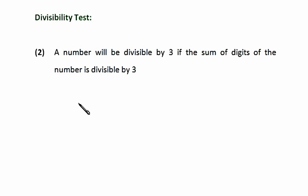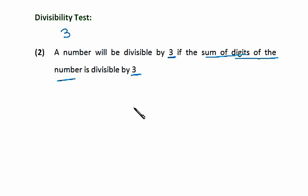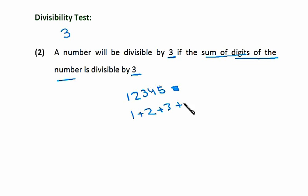Now friends, we'll do the divisibility test of the number 3. The rule is: a number will be divisible by 3 if the sum of the digits of the number is divisible by 3. This means that to find whether a number is divisible by 3 or not, we have to add all the digits of that number. Suppose we have the number 12345. We will add 1 + 2 + 3 + 4 + 5, which equals 15. And 15 is divisible by 3, so the number 12345 is divisible by 3.